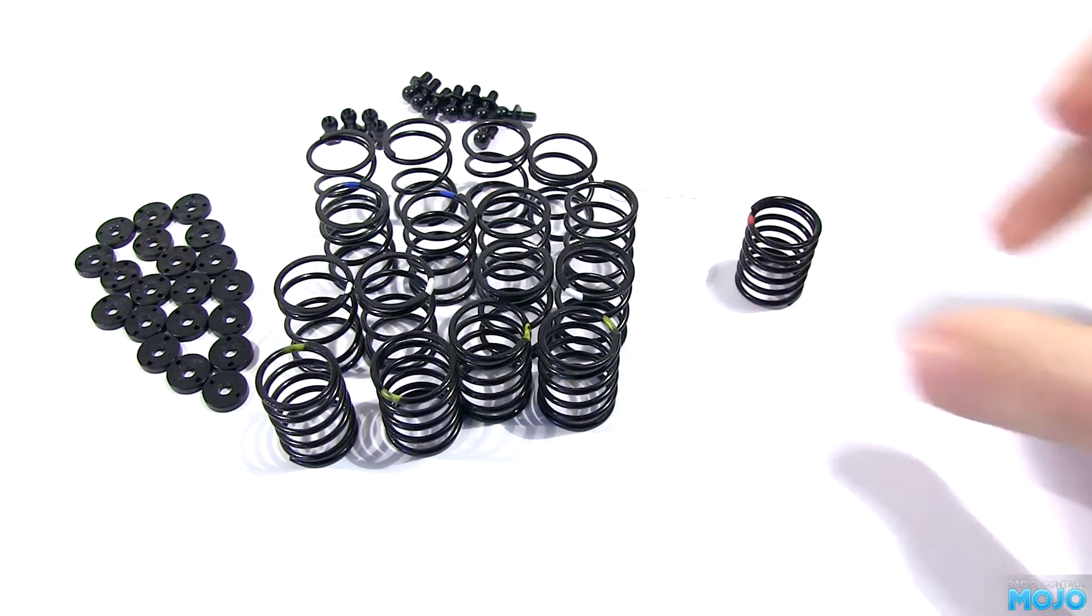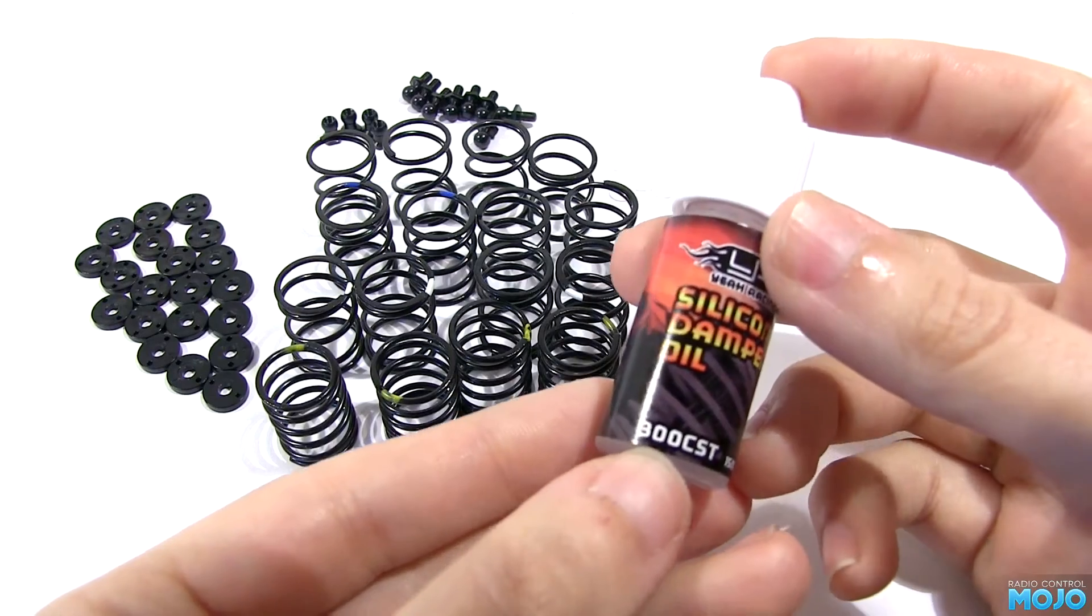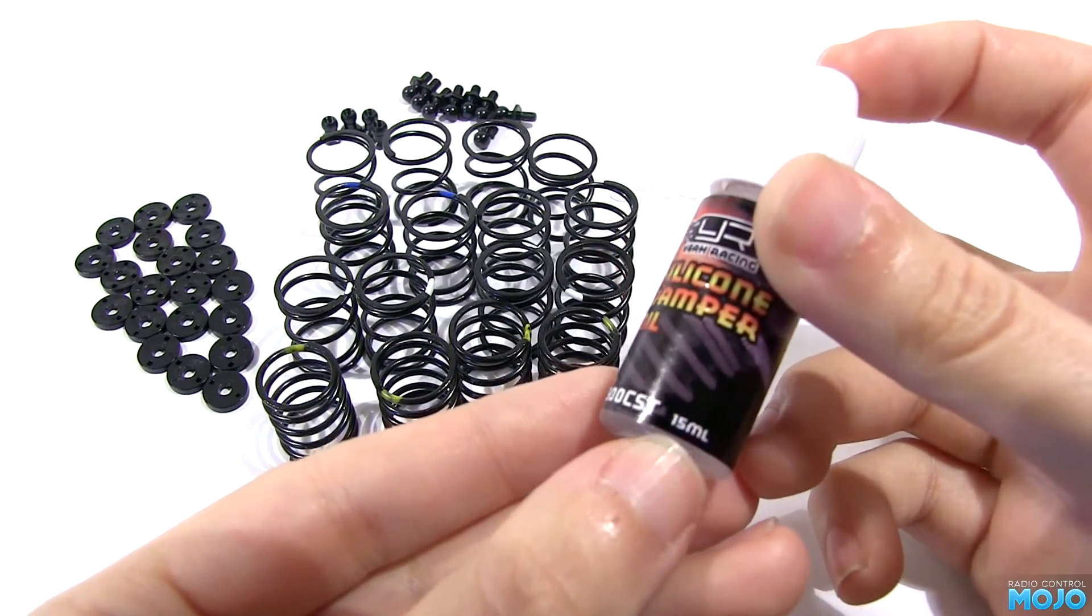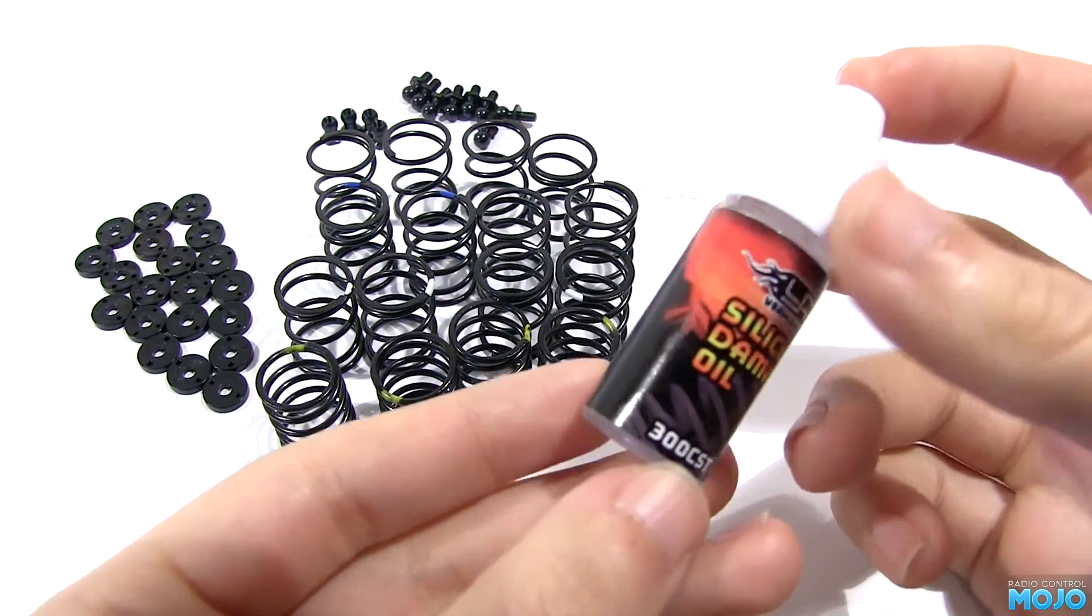The other 3 soft ones are on the built up dampers. A small bottle of 300 CST oil, which is somewhere near 30 weight I reckon.